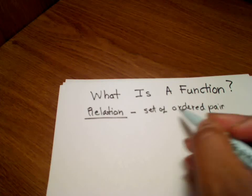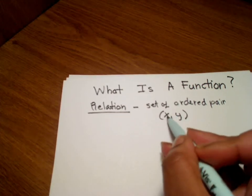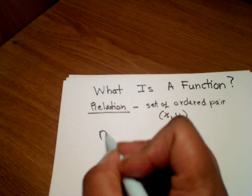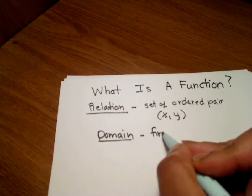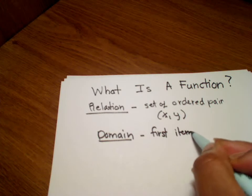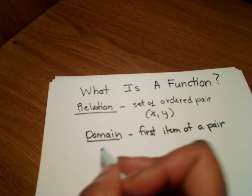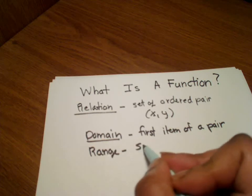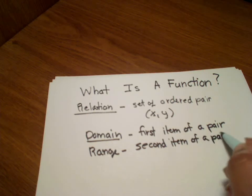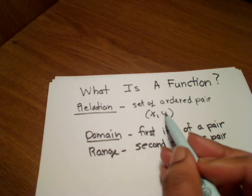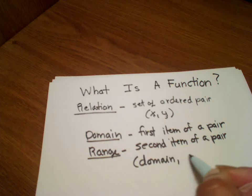Now, when we have ordered pairs such as this — this is a set of ordered pairs. To talk about the first item of a pair, we call that the domain. And when we talk about the range, we're just talking about the second item of a pair. So the first one is the domain, and the second one is the range.